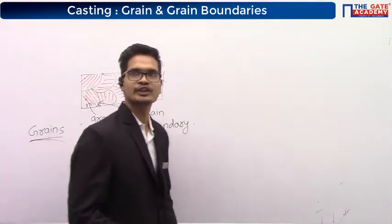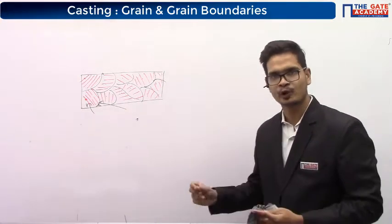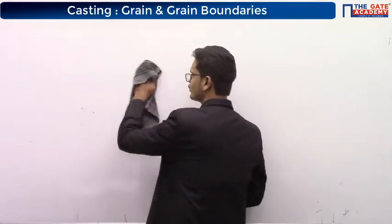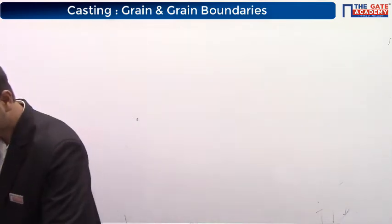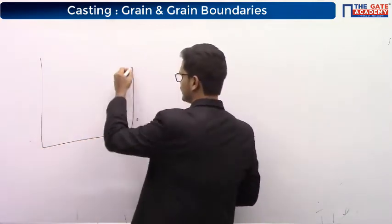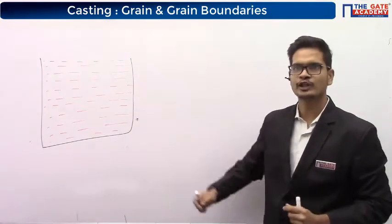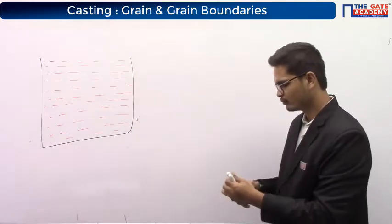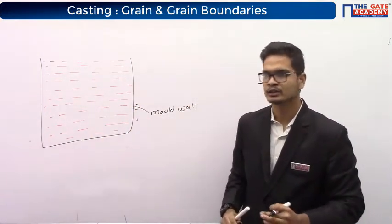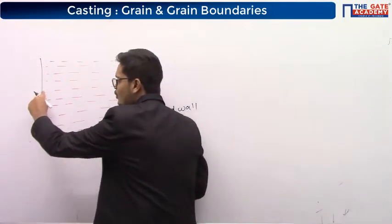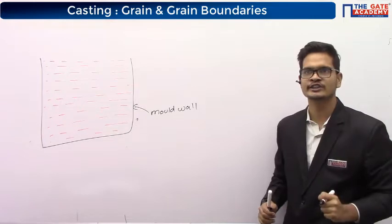I just wanted to teach you what is grain and what is grain boundary. The reason I'm teaching this is to tell you what kind of grains are formed in pure metal and what kind of grains are formed in alloys. Let's say this is the mold cavity. Inside this mold cavity, I poured the molten metal. The mold wall is at room temperature, and the molten metal is at high temperature.